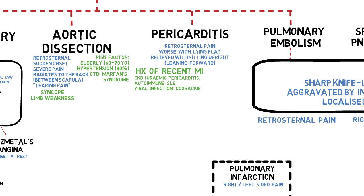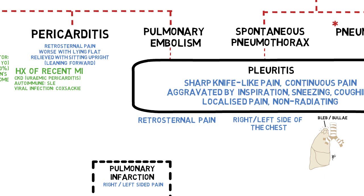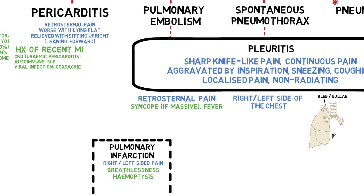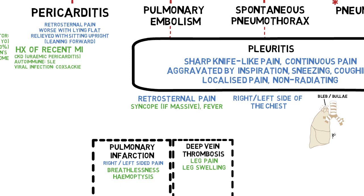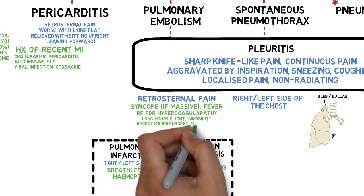In pulmonary embolism, if the embolus is large enough to occlude a large pulmonary artery, less blood will return to the heart and into the systemic circulation. In that case, the patient may also have syncope or presyncope. Symptoms that suggest pulmonary infarction are dyspnea and haemoptysis. If the pulmonary embolus originated from deep vein thrombosis, the chest pain may be preceded by a history of unilateral leg pain or swelling. Risk factors for thrombus formation include long hours of immobility such as international flights, or a history of bed rest due to recent major surgery. Some malignancies can also cause a hypercoagulable state.